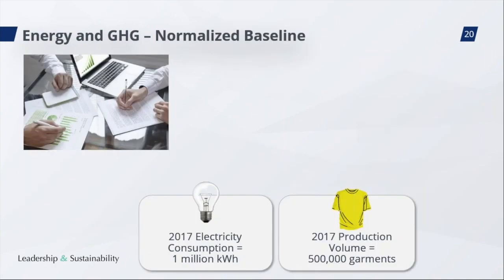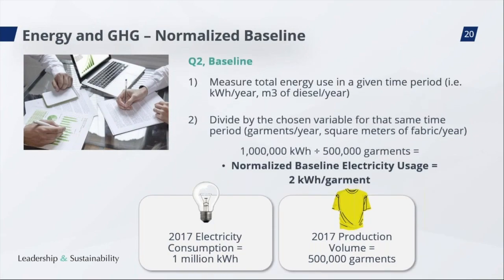Here is an example of a normalized baseline and how to calculate it. In our setting, we consumed 1 million kilowatt-hours of electricity and produced 500,000 garments in 2017. To calculate the normalized baseline electricity usage, we divide the electricity consumption by the production volume in 2017: 1,000,000 kWh ÷ 500,000 garments = 2 kWh per garment. It's a simple division, but it's important that you have the correct quantities from the outset.